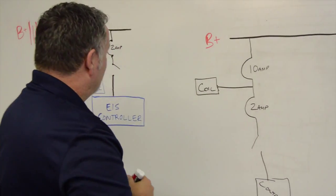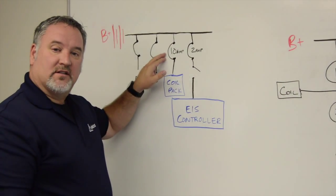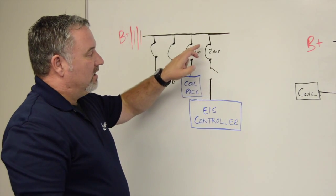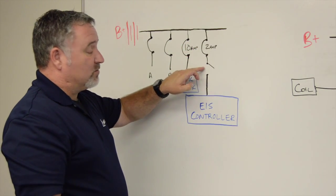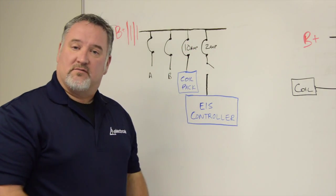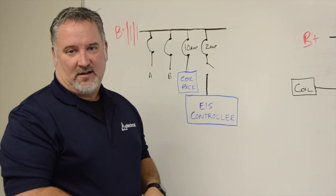As soon as they came back and rewired the airplane to the 10-amp circuit directly feeding the coil pack, and then the 2-amp circuit feeding the controller through a switch, the electronic ignition worked correctly, and the airplane flew fine.